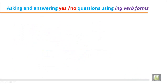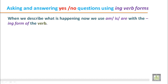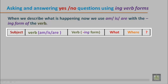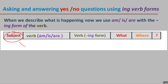Asking and answering yes/no questions using ING verb forms. When we describe what is happening now, we use am, is, or are with the ING form of the verb. It says something is happening now, at this moment, right now. This structure shows how to make a sentence with ING verb forms. First, put the subject, then choose am, is, or are according to the subject. After that, use the verb in its basic form with ING. Then add information about what or where. Finally, the question mark — not a full stop, as it is a question.